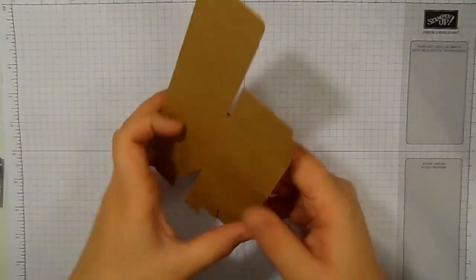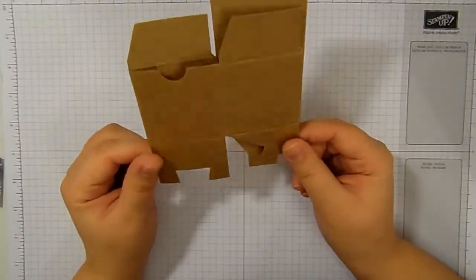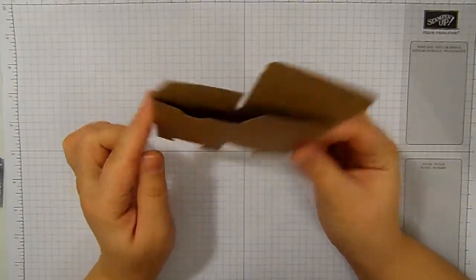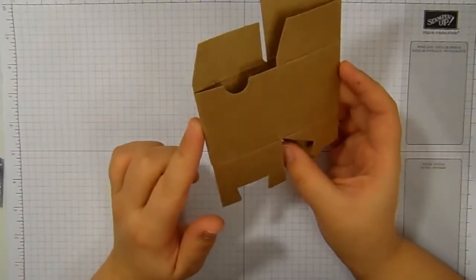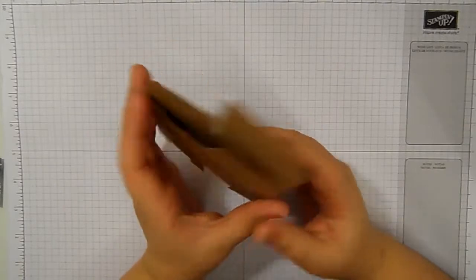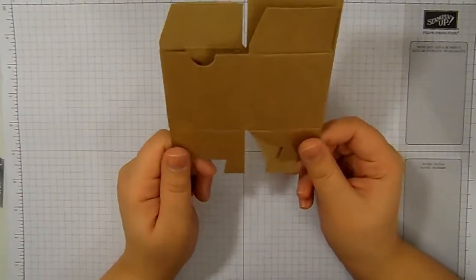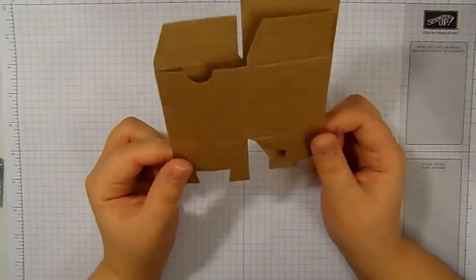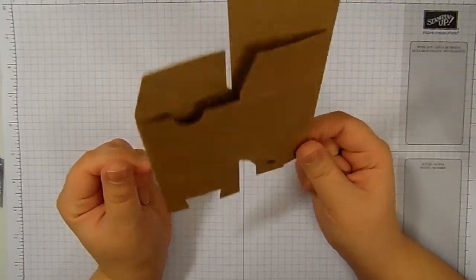So the start of the boxes is our tiny treat boxes. Now these are fabulous. You get 25 in a packet because there's 25 days of Advent and they are I think less than £7 for 25 which is awesome value.